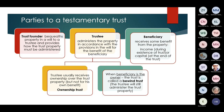An income beneficiary receives income — for example, if the property is rented out, you receive the rent, or if it is money that is invested, you receive interest. The capital beneficiary is the person who receives the property in the trust when the trust is wound up and comes to an end.